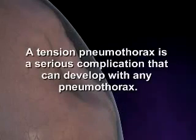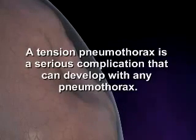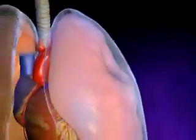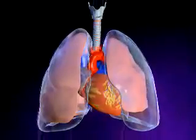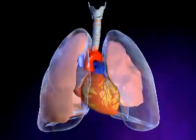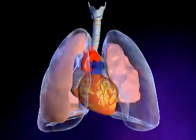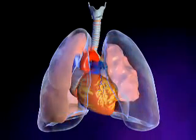A tension pneumothorax is a serious complication that can develop with any pneumothorax. If the pocket of trapped air cannot escape, it continues to grow, and the increased pressure in the pleural cavity can push the heart and major blood vessels to the other side of the chest.